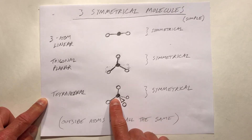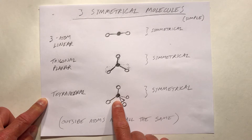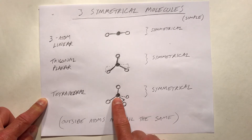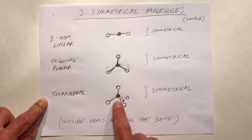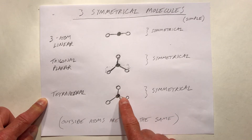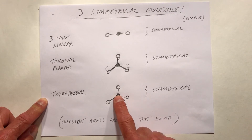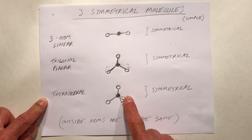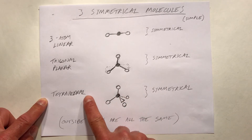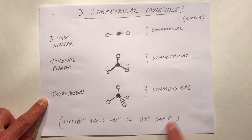A triangular bond indicates that it's coming out of the page towards us, and a dashed bond made of hash marks indicates that the bond is going into the page away from us. That's called a tetrahedral structure, and it would also be symmetrical.